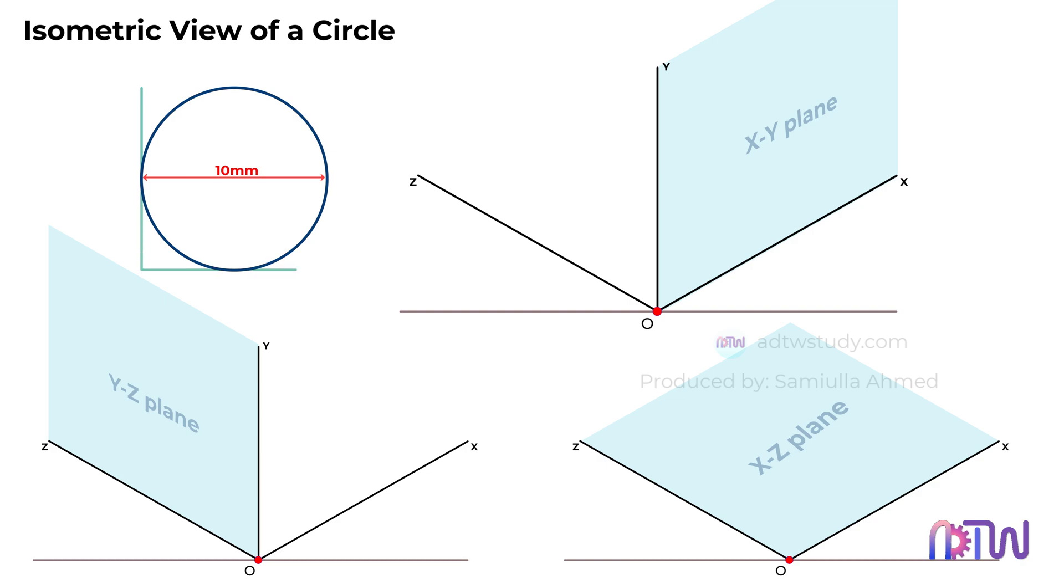Imagine a square surrounding this circle, inside which the circle fits perfectly. In that case, the side length of the square will be equal to the diameter of the circle, which is 10mm in this instance.